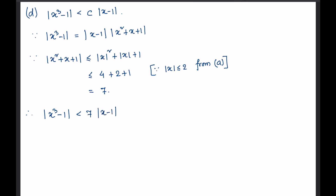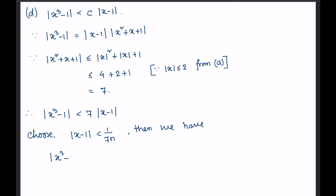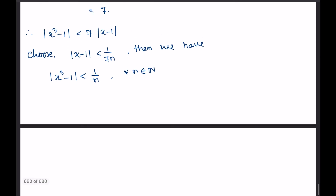Therefore, |x³ - 1| < 7 · |x - 1|. Now choose |x - 1| < 1/(7n). Then we have |x³ - 1| < 1/n for all n belonging to the natural numbers. Therefore, delta = min(1, 1/(7n)) = 1/(7n). The required condition on |x - 1| is |x - 1| < 1/(7n).